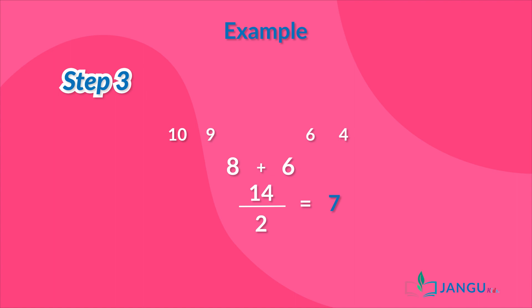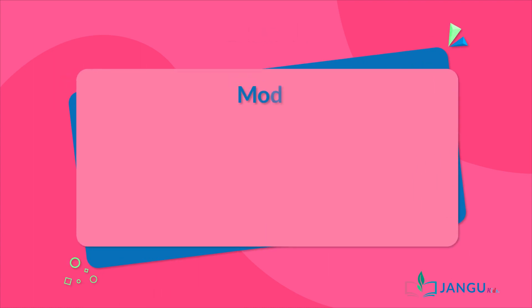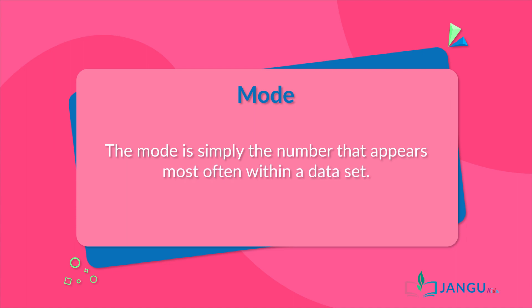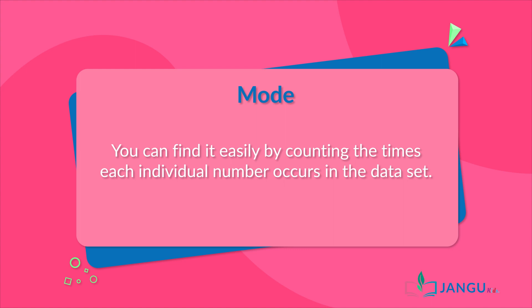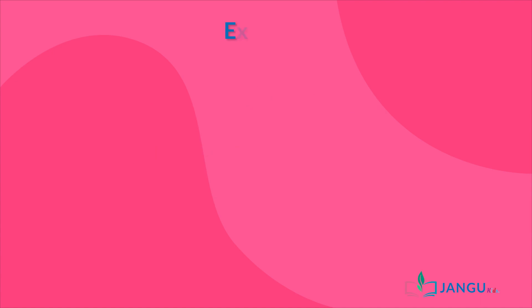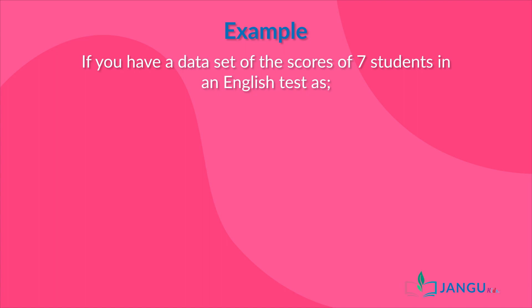The last mathematical tool for data description and presentation we'll discuss is mode. The mode is simply the number that appears most often within a data set. You can find it easily by counting the times each individual number occurs in the data set. For example, if you have a data set of the scores of seven students in an English test as nine, four, six, ten, four, eight, and four,